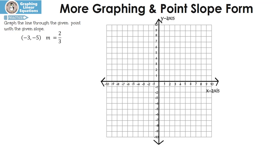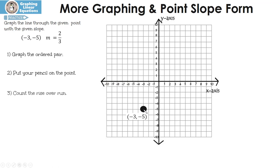Let's see how you did. The first thing you're supposed to do is graph the ordered pair negative three, negative five. Then you put your pencil on the point — this is super important. Then we need to count the rise over the run — that's our slope. Our slope in this case is two thirds, which means rise over run. We're going to go up two and run three from the point we just did.